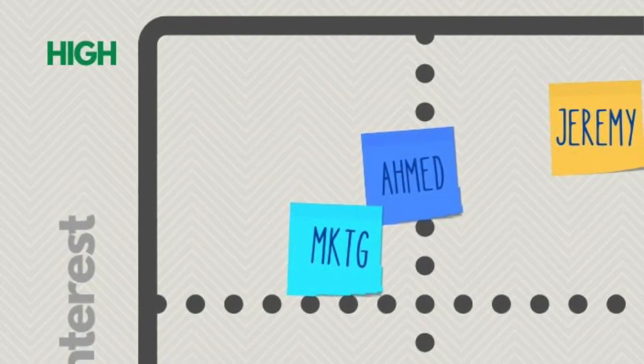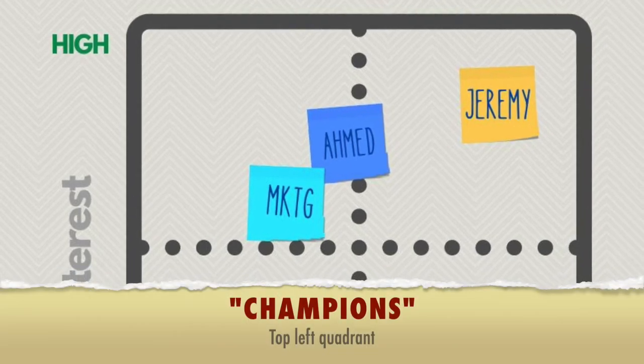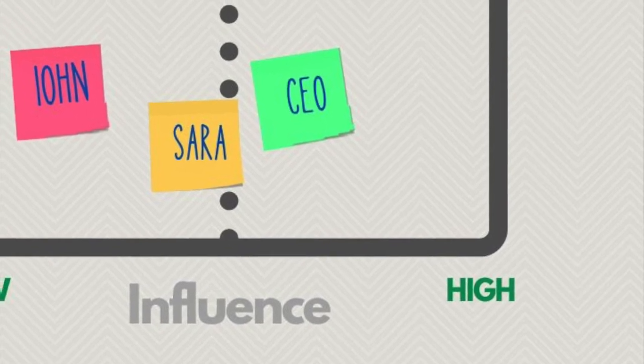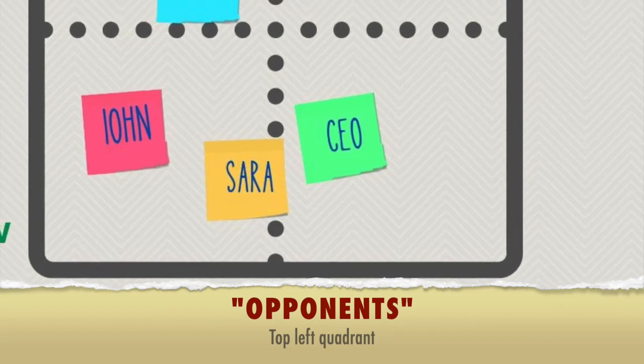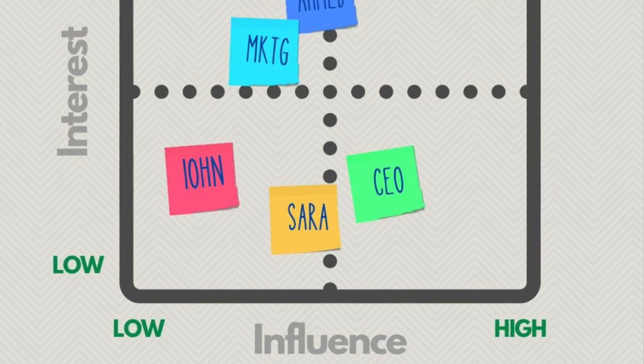The top left-hand corner — people who are really interested but you don't really need them — these are your champions. They're a useful resource pool: get them involved in project groups, have them influencing other people. Finally, the bottom right-hand corner — people you really need but who aren't interested — these are your opponents. You need strategies for how to bring them on board. Remember you can use your champions here: if they're close to these opponents, ask them to find out what's going on and start building plans to get these people interested.